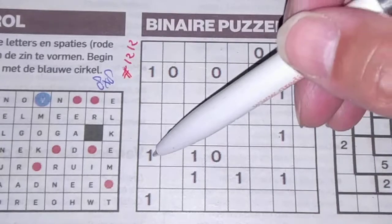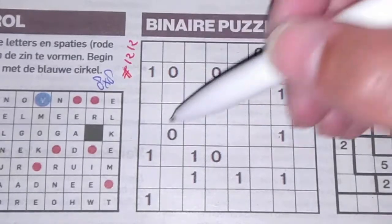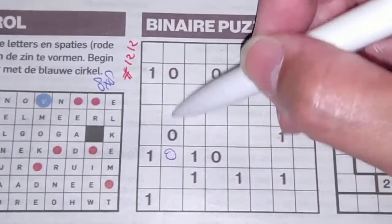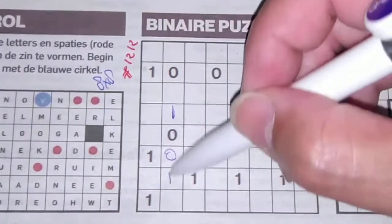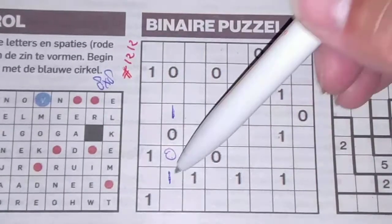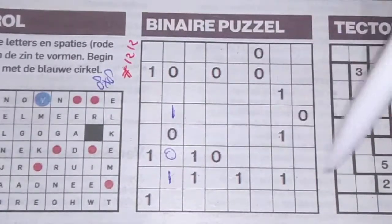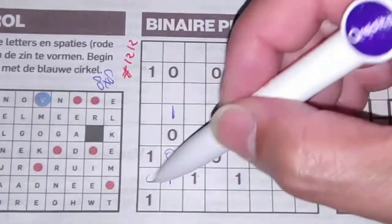Between two 1's comes an O. Double O — here a 1, there a 1. Now I have four 1's, so the rest are O's.